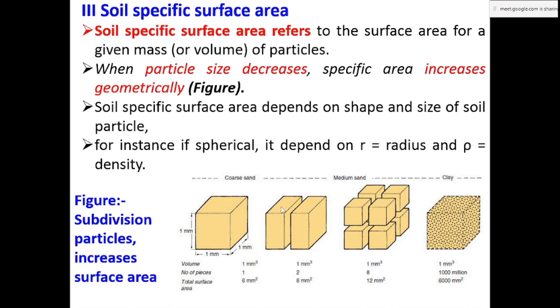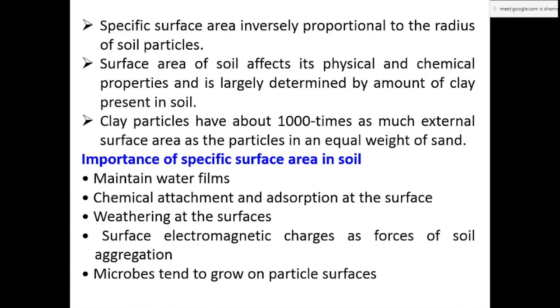Specific surface area is inversely proportional to the radius of the soil particles. If radius is high, specific surface area is less. If radius is small, the specific area is higher.